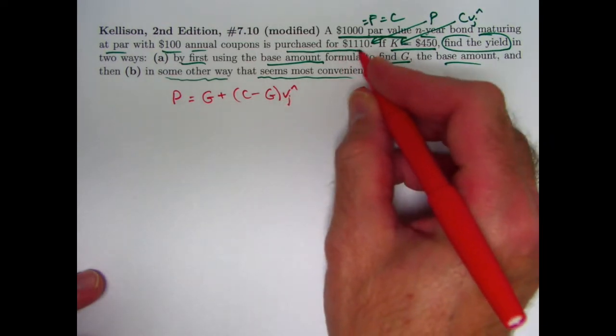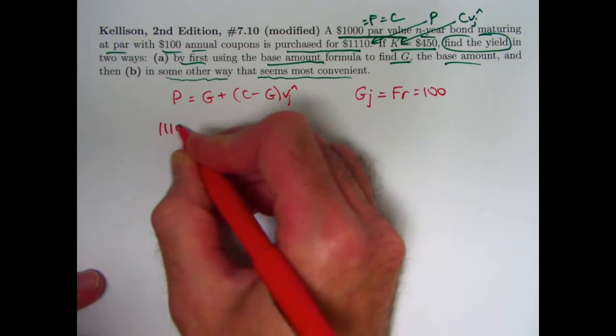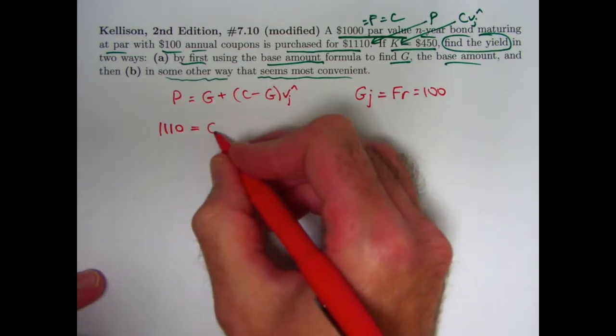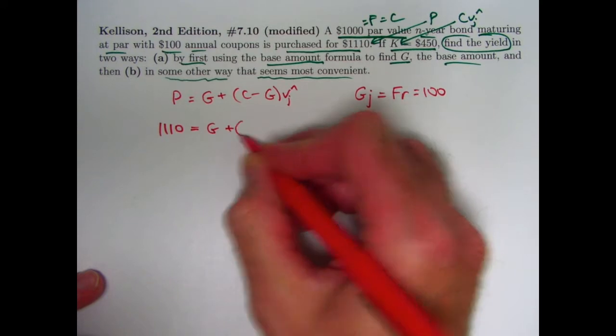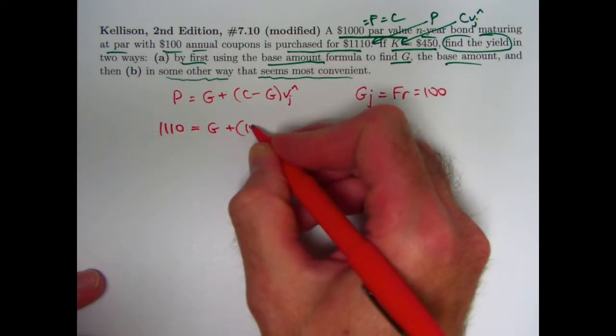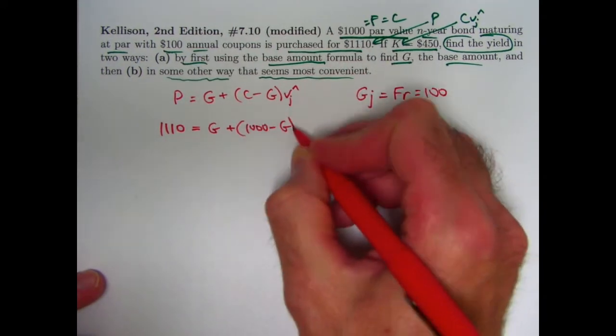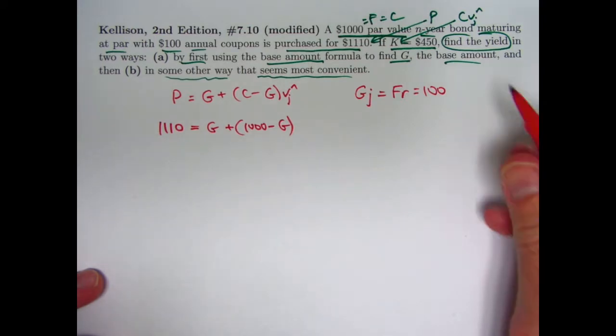The purchase price was $1,110. Base amount is unknown, G. Redemption value is a thousand. V to the N, we have to figure out what that is.